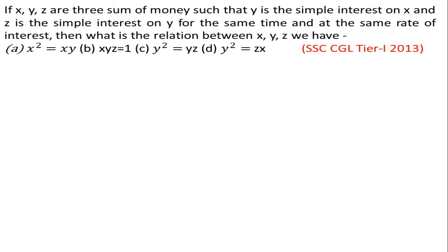तो यहाँ पर question समझ लेते हैं — यहाँ पर तीन amount of money हैं। पहला case यह बता रहा है कि y, simple interest है x पर — यानी x अगर principal amount है तो उस पर simple interest y है। और दूसरा case यह बता रहा है कि z, simple interest है y पर। Time period same दिया गया है और rate of interest भी same दिया गया है।